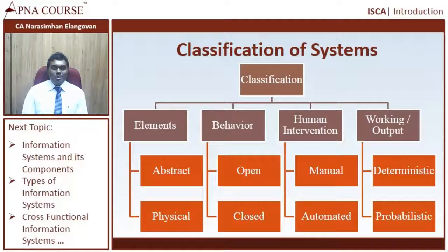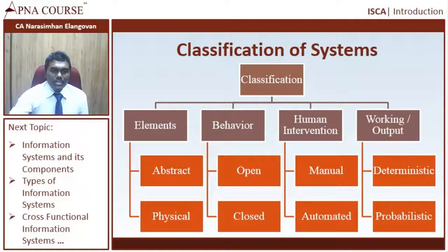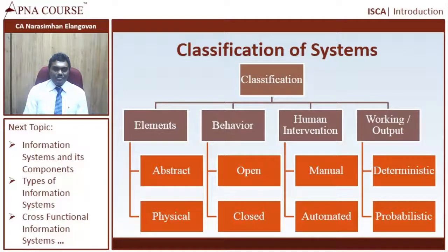Having understood what is the meaning of information systems, let us now try to see how information systems are classified. Information systems are classified based upon elements, based upon behavior, based upon human intervention, and based upon the working or the output. These are the four broad levels of classifications of systems.